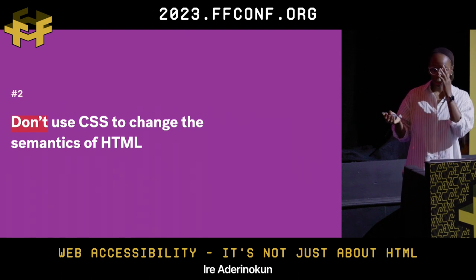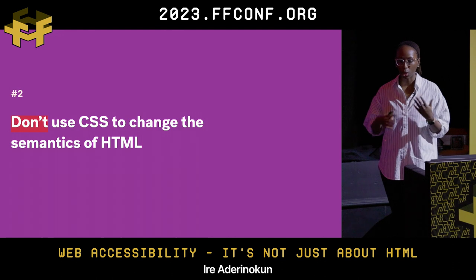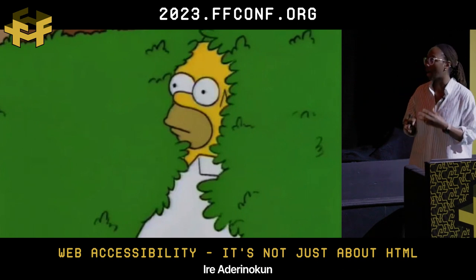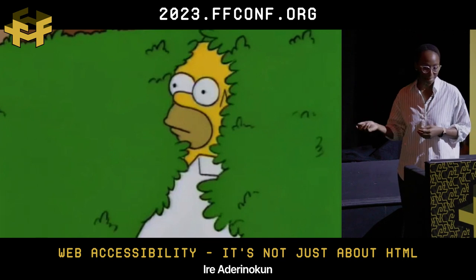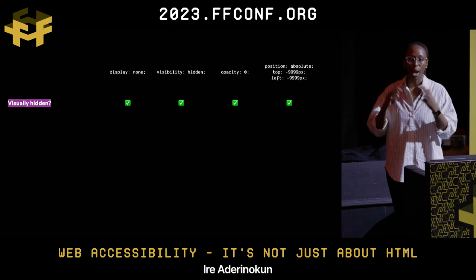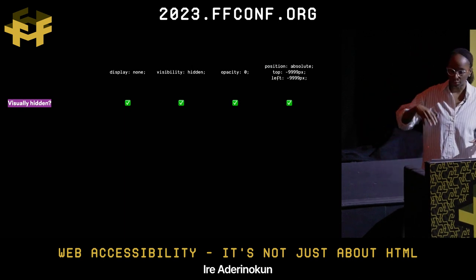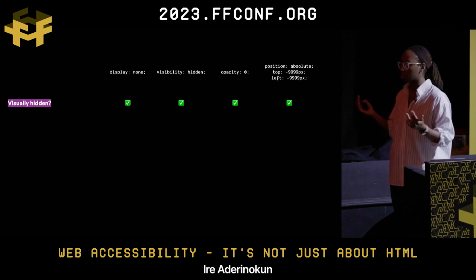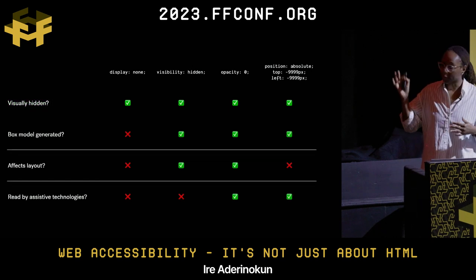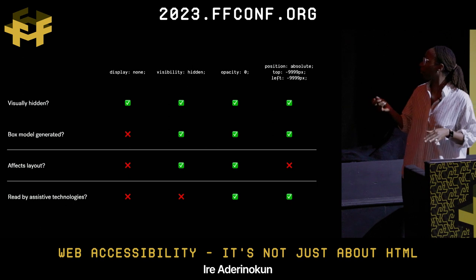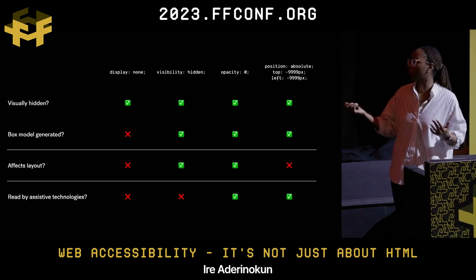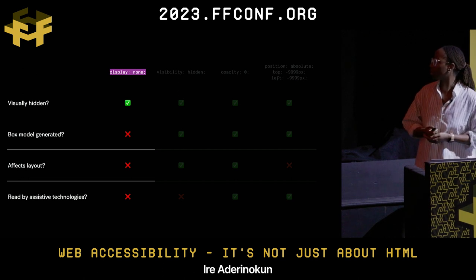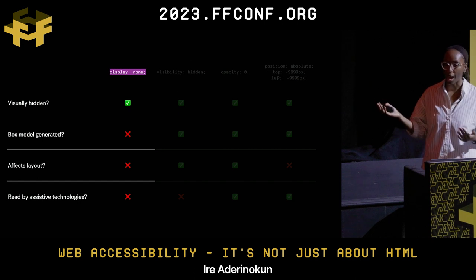Aside from adding new information with CSS, we also shouldn't use CSS to change content or meaning on the page. A common pitfall is hiding things with CSS and not doing the best job of it. There are many different ways to hide something visually — display none, visibility hidden, opacity, position absolute — and they all result in the same thing visually. To a sighted user they're basically all the same, but they differ quite drastically in how they impact things under the hood: whether the box model is generated, whether it affects the layout, and crucially whether it can be read by assistive technologies.